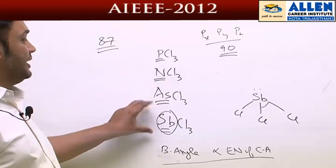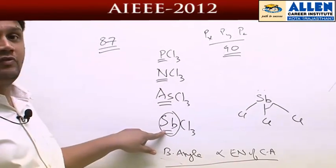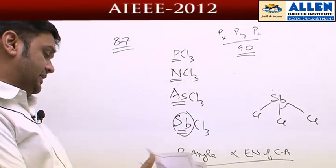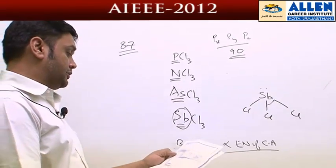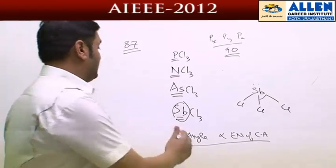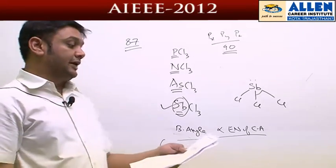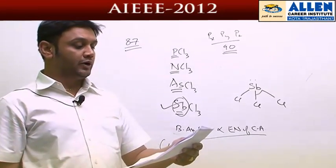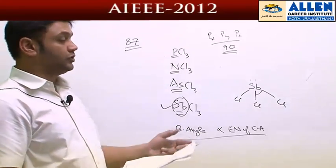So we can say that with the increase in size of central atom, the bond angle will reduce. The correct option for this particular question is answer number 4. The smallest bond angle will be in SbCl3, which can be explained by both of these approaches.